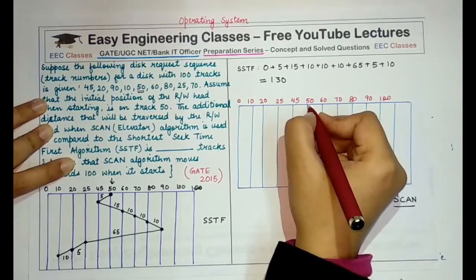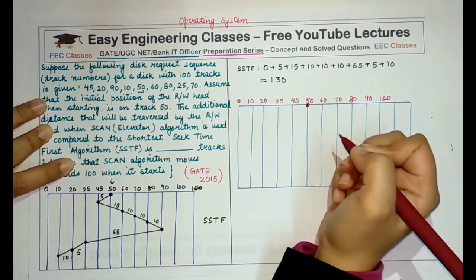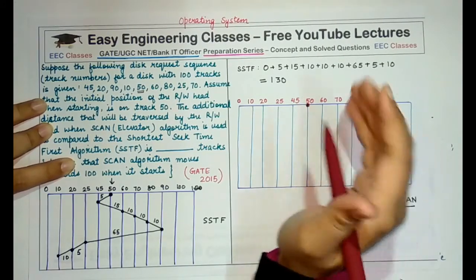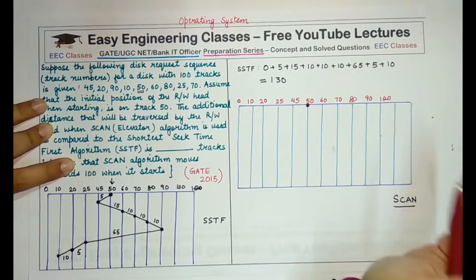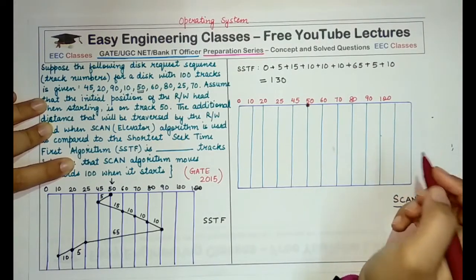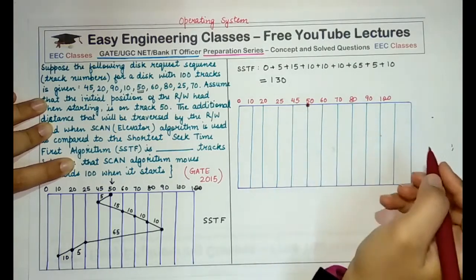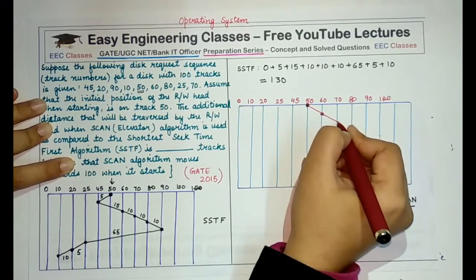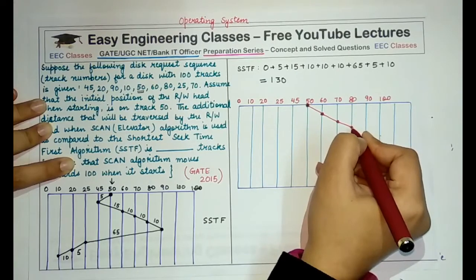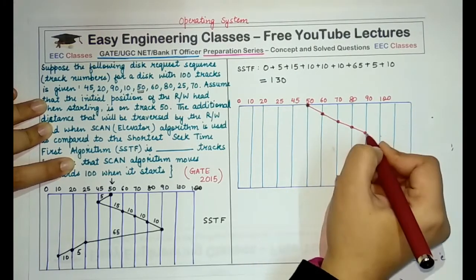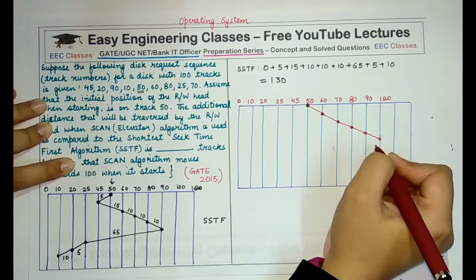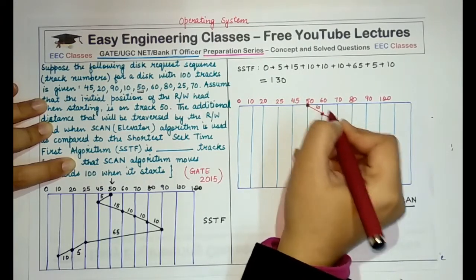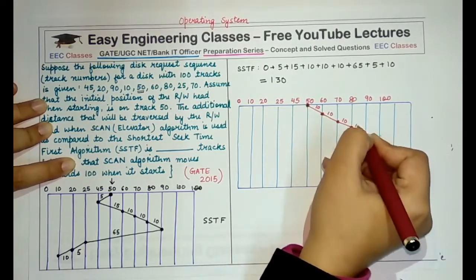So initially our disk head is at this position 50 and one request is serviced here. It is moving in the direction towards 100. So we do not have to check or think of anything else. We have to move towards the right and service all the requests that come in our way. So first 60 is serviced, then 70, then 80, then 90, and it will go till the extreme end to 100, even if 100 is not an actual request. So how much distance or how much time is taken? 10 in each case.